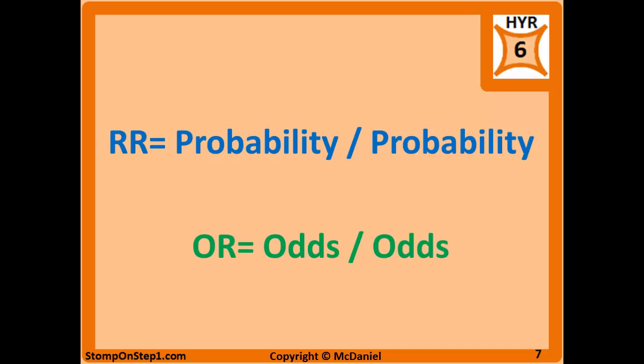The relative risk is one probability divided by another probability, or you can just think of it as a ratio of probabilities. As the name would imply, the odds ratio is just a ratio of odds, or a proportion of odds.